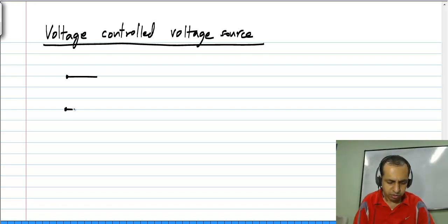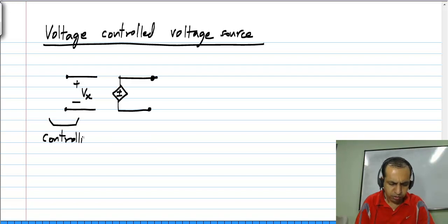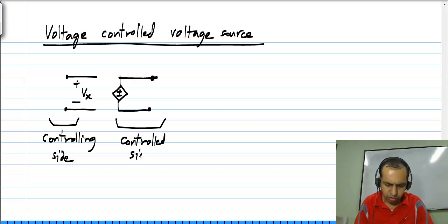This is denoted by this particular symbol. Now independent voltage and current sources are denoted by a circular symbol. To distinguish the control sources from them, a diamond symbol is used. What this means is that these are the controlling nodes, and let's say the voltage between these two is Vx. This is the controlling side and this is the controlled side, and the voltage between these two is given by some k times Vx.